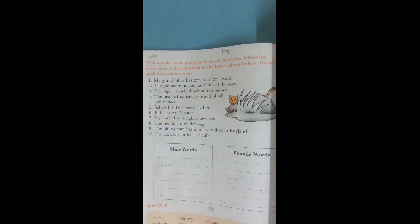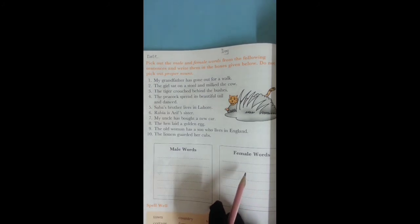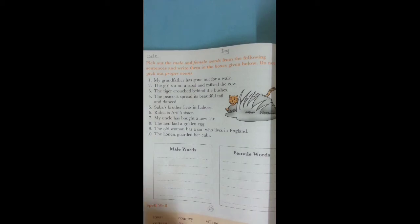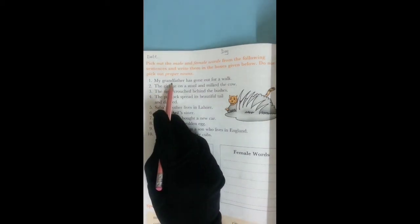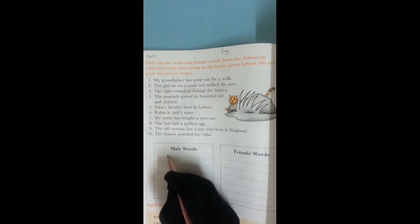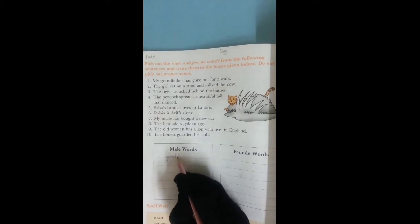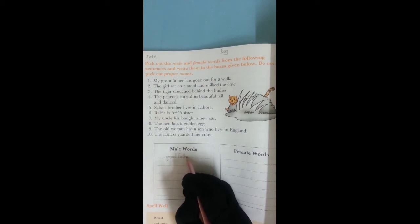My grandfather has gone out for a walk. Now children, tell me the male or female word. If it's male, you write in the male column. If there's a female word, write in the female column. Yes, the word is grandfather, and grandfather is a male word. So we write in the male column: grandfather.